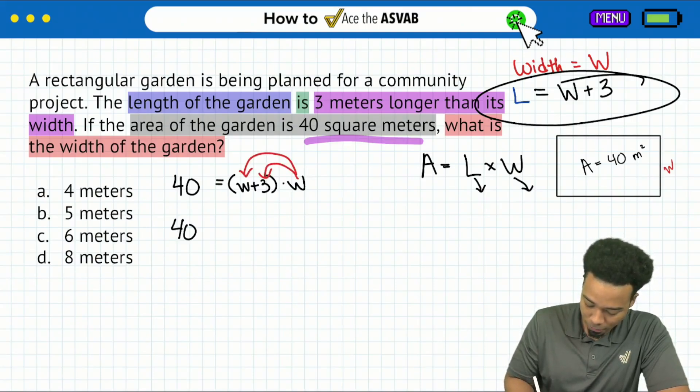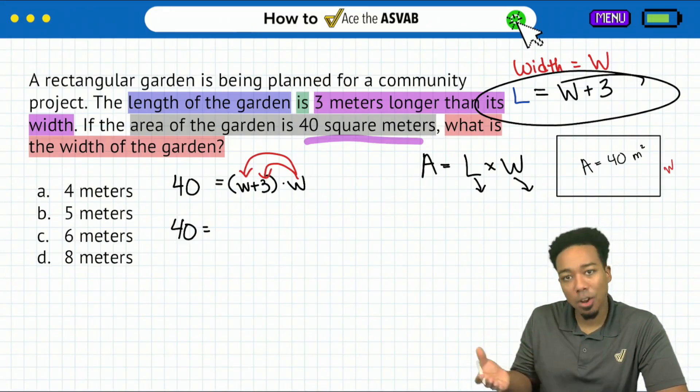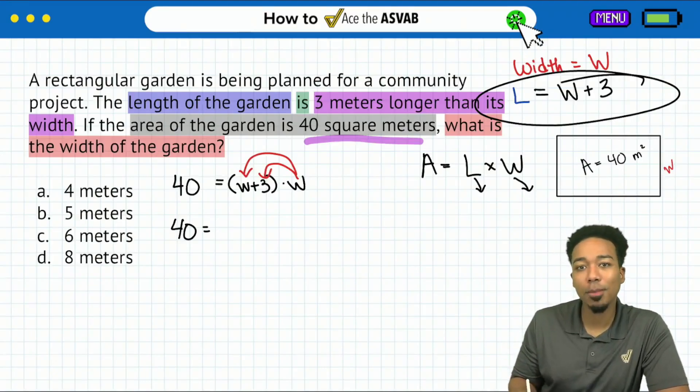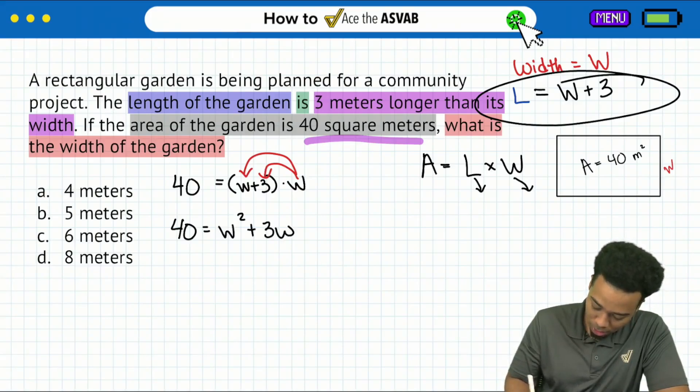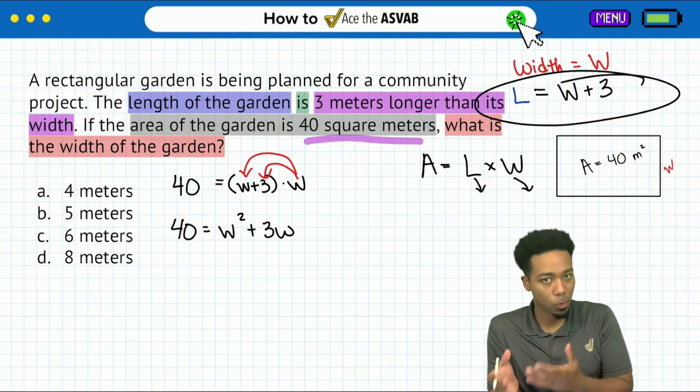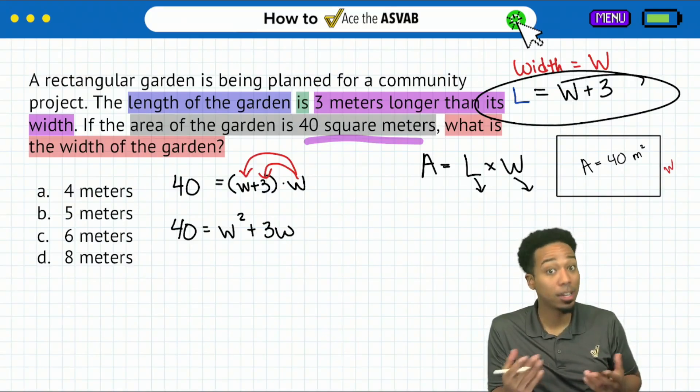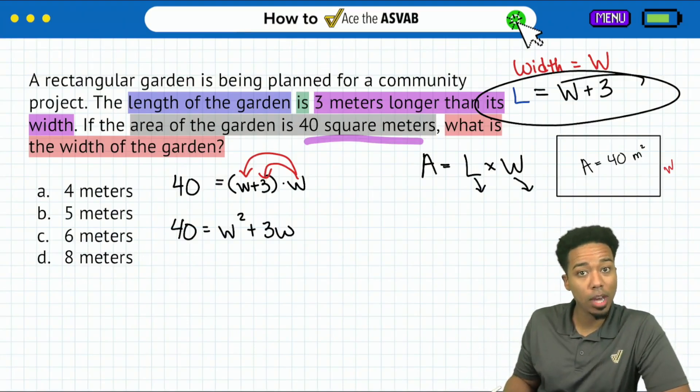So in doing so, we'll get 40 equals W multiplied by W. Well, anything multiplied by itself is going to be that number squared. So W times W is W squared. Then we have three times W. So that'll be three W. So this is what I mentioned earlier. We now have a polynomial equation that we have to figure out how to solve.